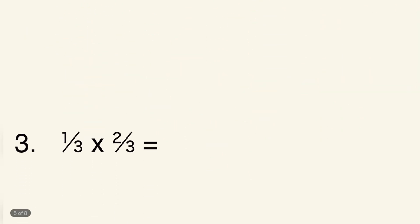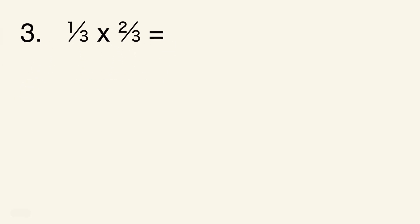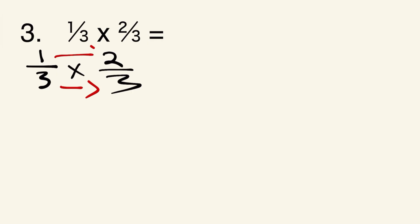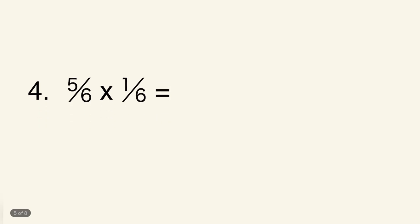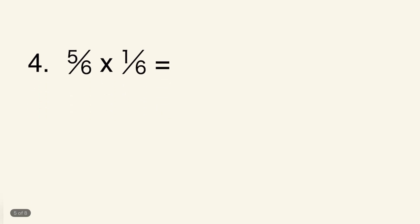The next example is one third times two thirds — or one third of two thirds, same thing. This is a fraction multiplied by a fraction. We just multiply across: numerators together and denominators together. Remember, unlike addition and subtraction, the denominators do NOT have to be the same when multiplying. One third times two thirds gives us two over nine, and this cannot be simplified further.